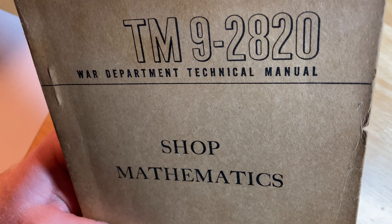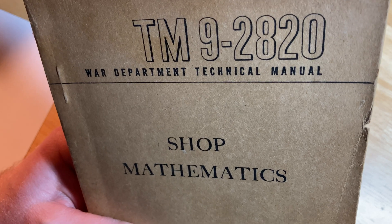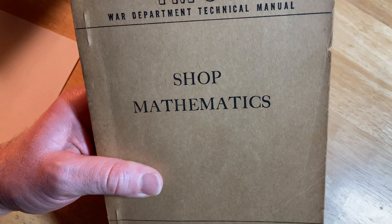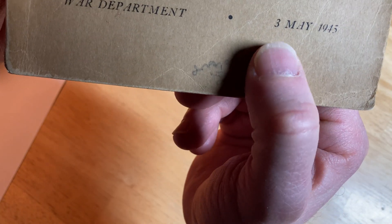Hello. In this video, we are going to take a look at this book. It says TM 9-2820, War Department Technical Manual, Shop Mathematics, War Department, 3rd of May, 1945.